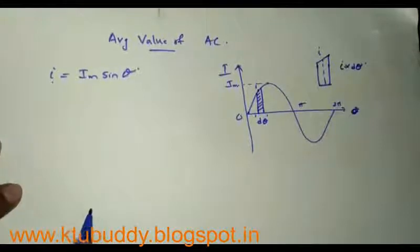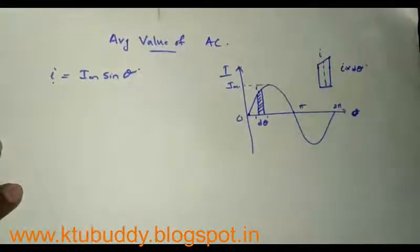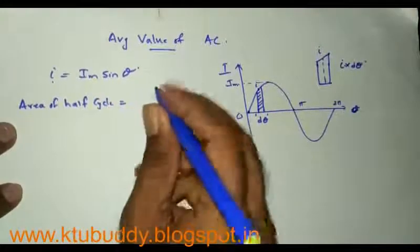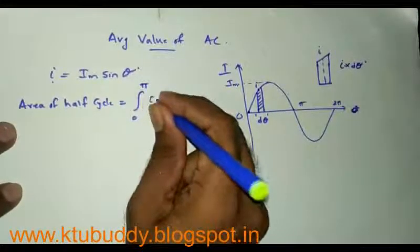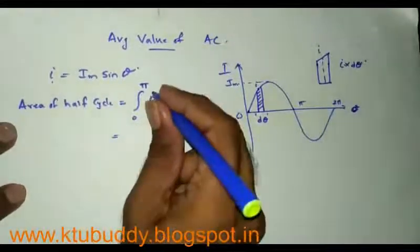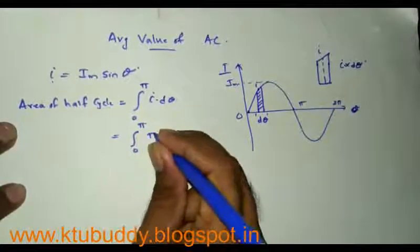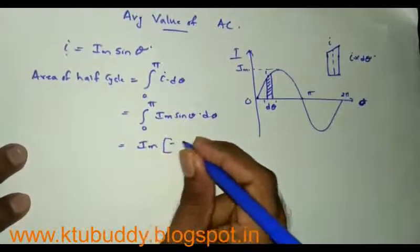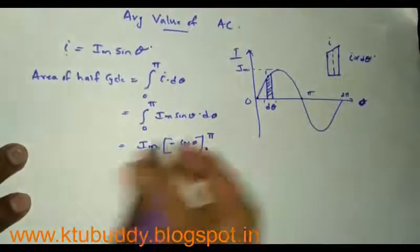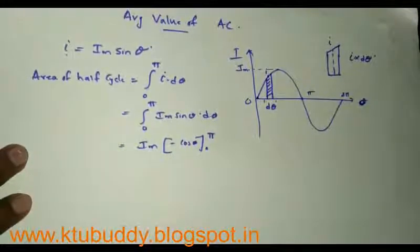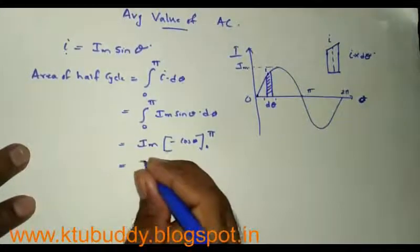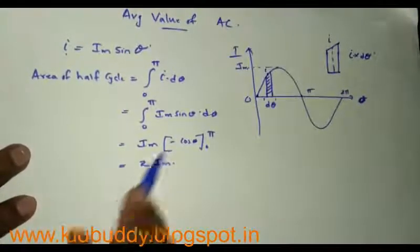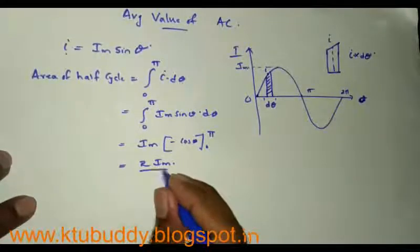The area of the half cycle from 0 to π is given by: area of half cycle equals integral from 0 to π of I dθ. Substituting I equal to Iₘ sine theta, this becomes integral from 0 to π of Iₘ sine theta dθ, which equals Iₘ times minus cosine theta evaluated from 0 to π. Since cos π equals minus 1 and cos 0 equals 1, we get Iₘ times minus(−1 − 1) = 2Iₘ. Therefore, area of the half cycle equals 2Iₘ.